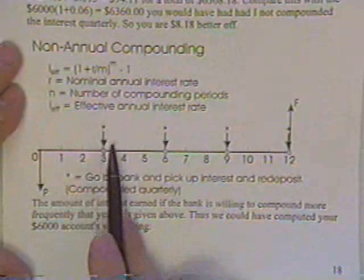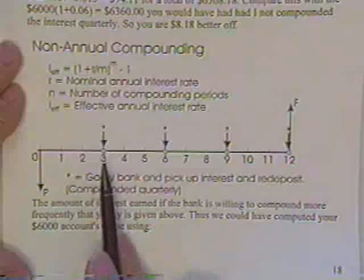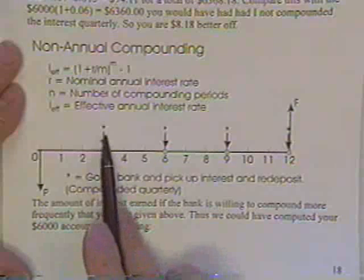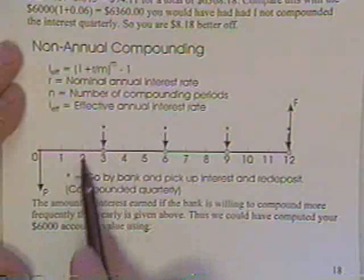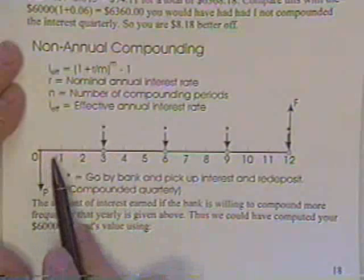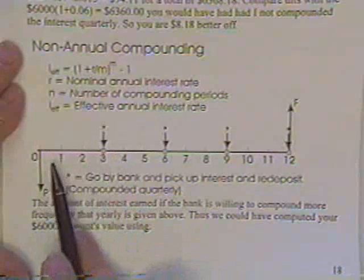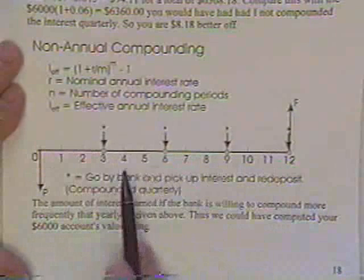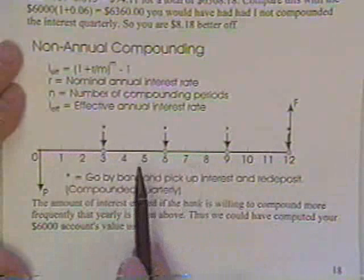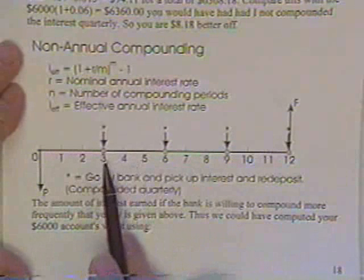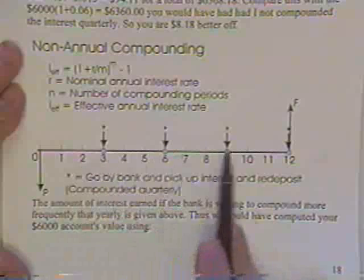Then the bank puts some more money into my account at the end of the third month. There's a little asterisk meaning this was obtained by multiplying this times the interest rate for three months.